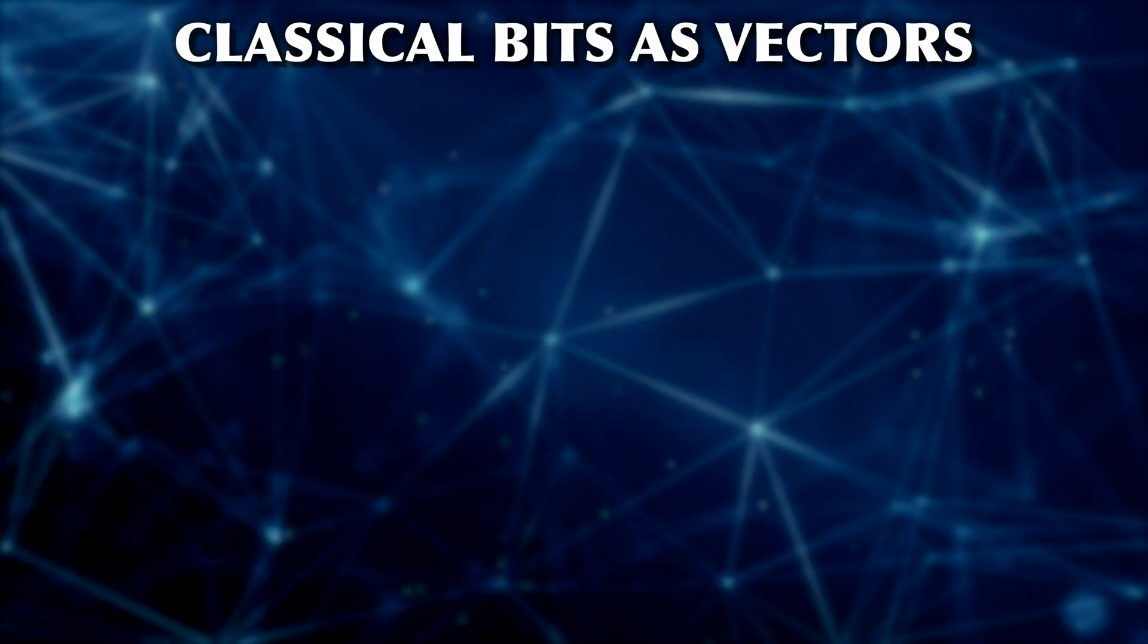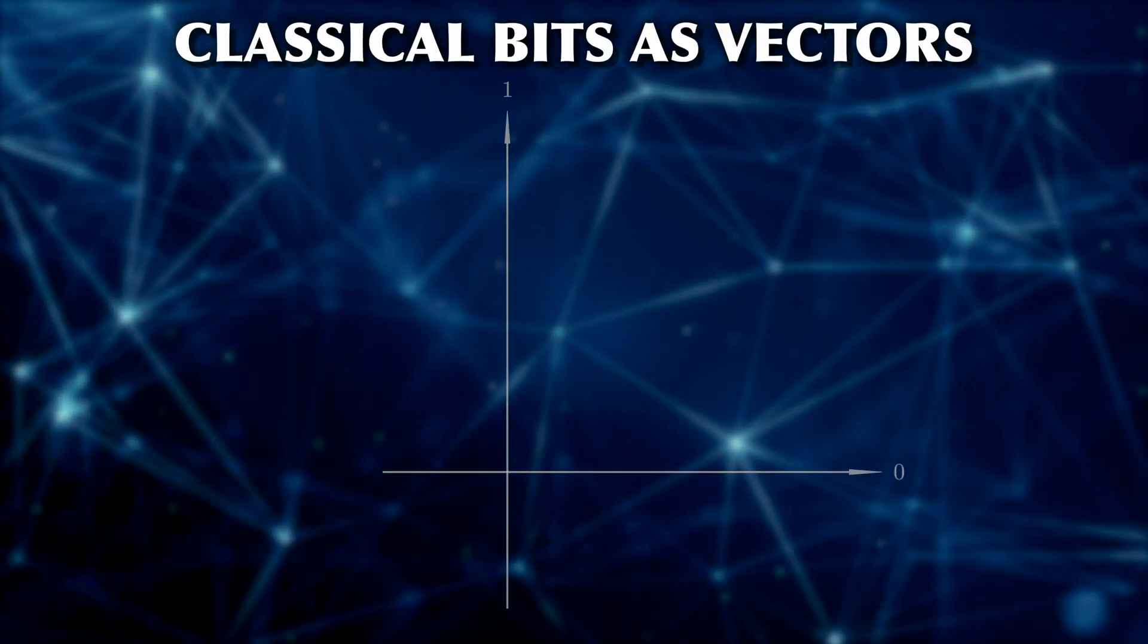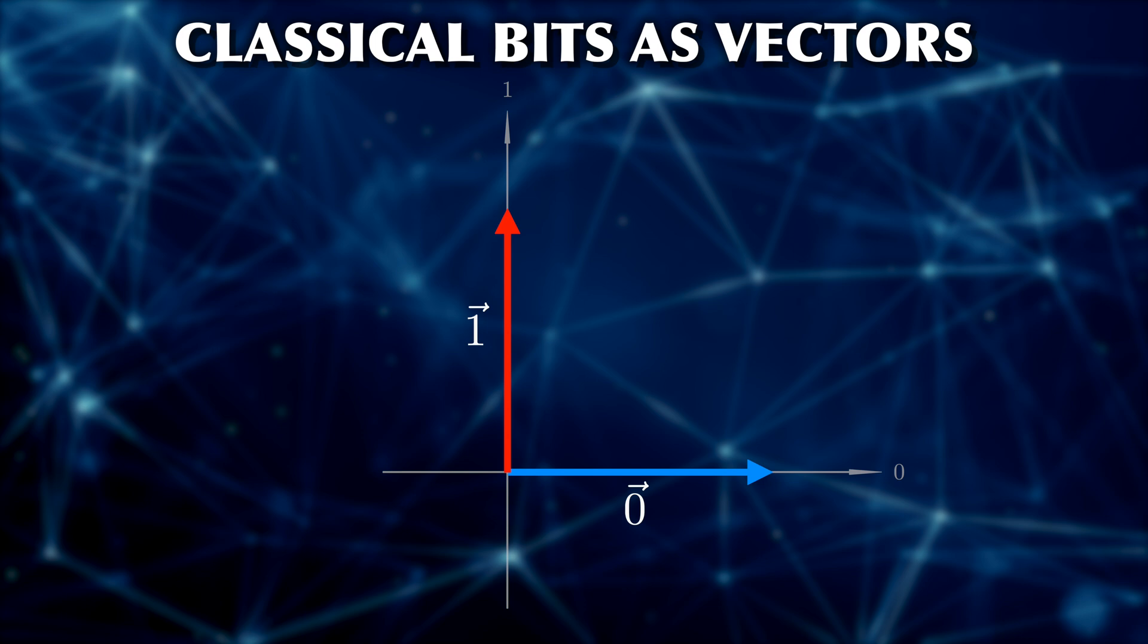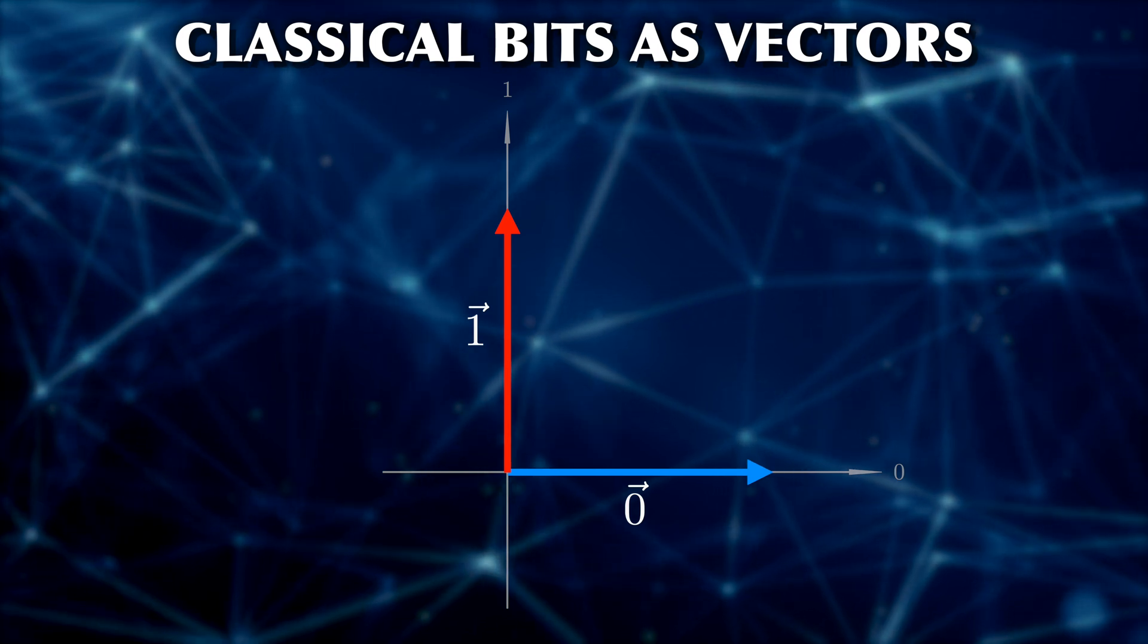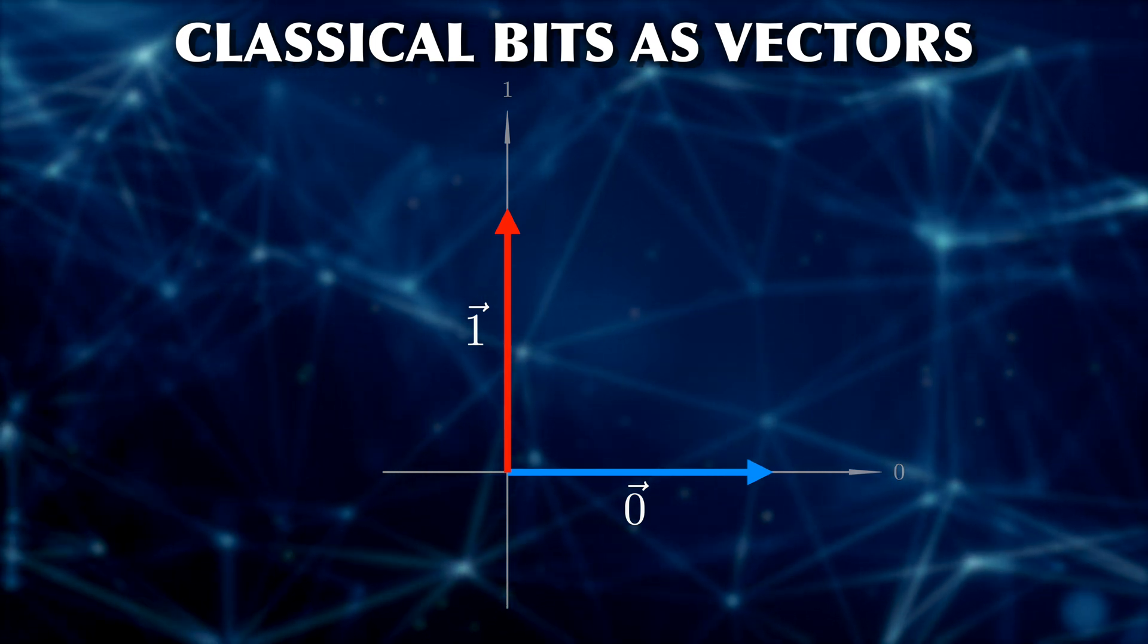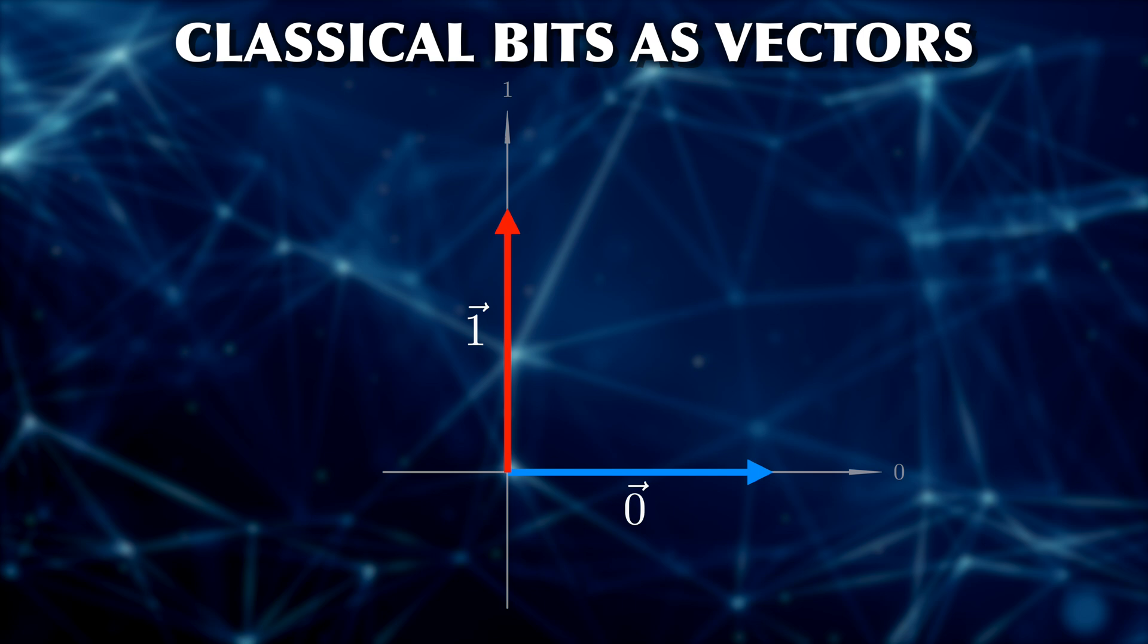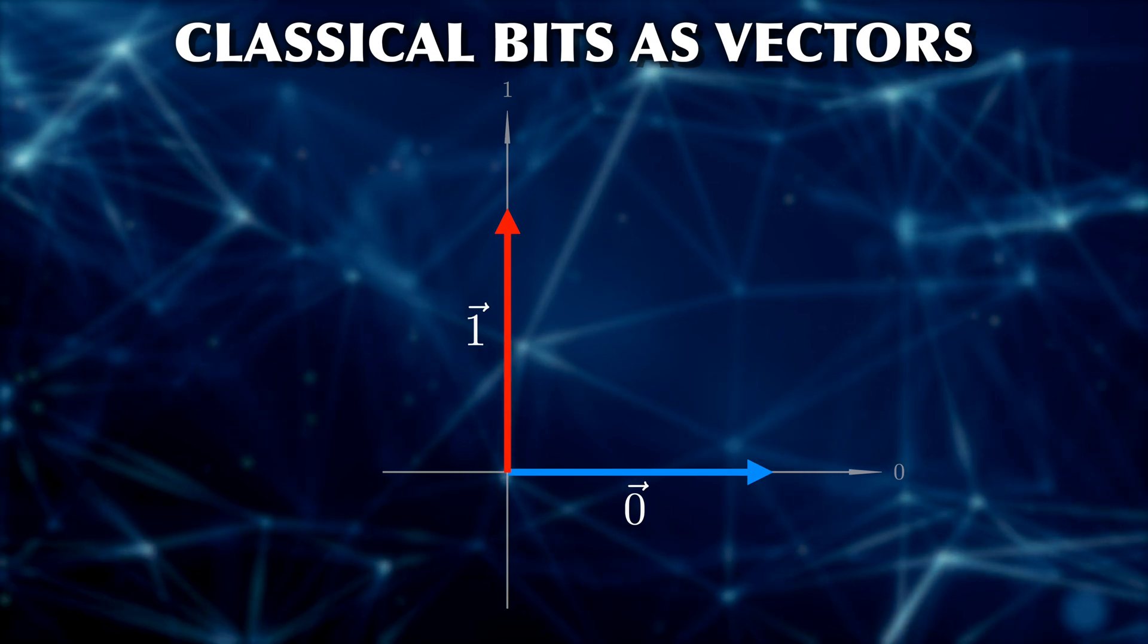The connection between vectors and bits and qubits is this. Classical bits are much like two separate directions, for example, the x and y vectors. But this is such a simple system that we usually do not even bother with the vector description, because we would gain very little from it. Qubits, though, can be in any mixture of states, so the vector description is both useful and meaningful.